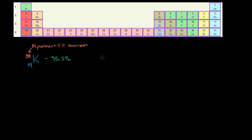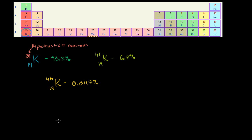Some other isotopes of potassium: you also have potassium-41, which would have 22 neutrons (22 plus 19 is 41), and this accounts for about 6.7% of the potassium on the planet. And then you have a very scarce isotope called potassium-40, which has 21 neutrons and is very, very scarce — it accounts for only 0.0117% of all potassium.